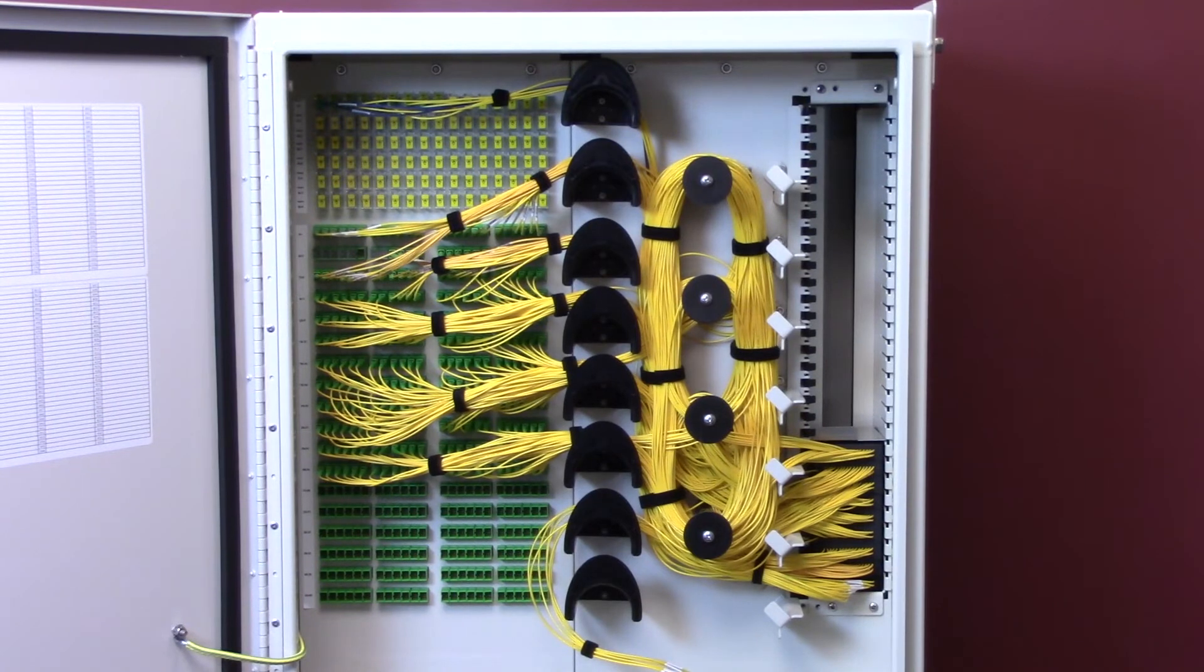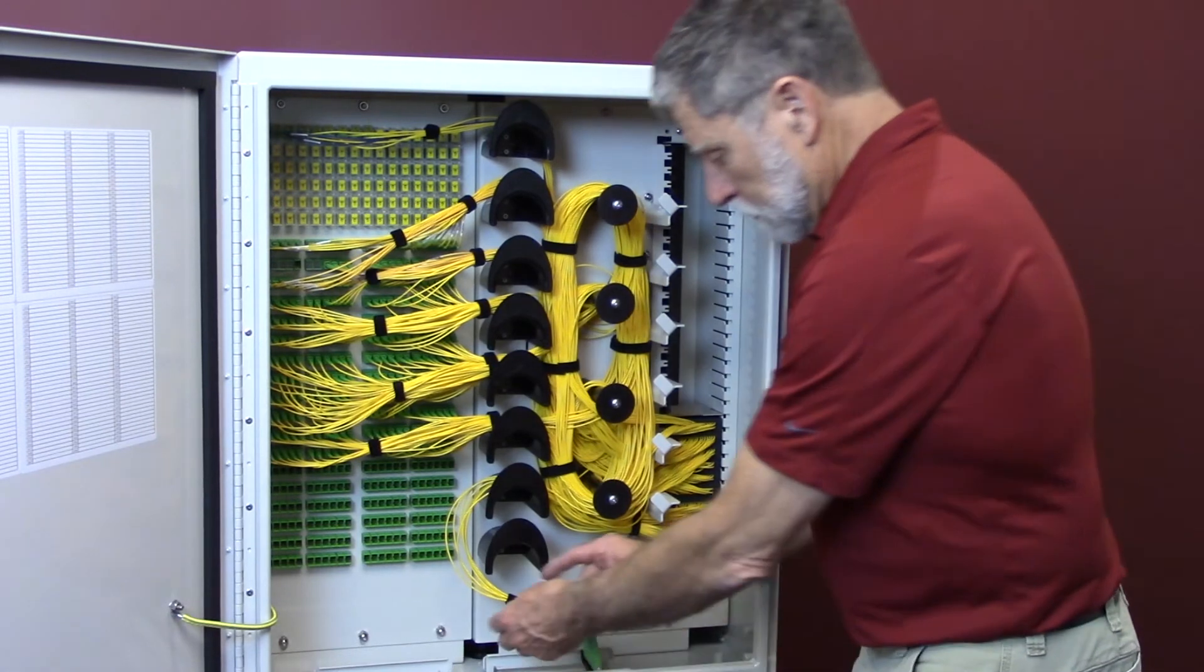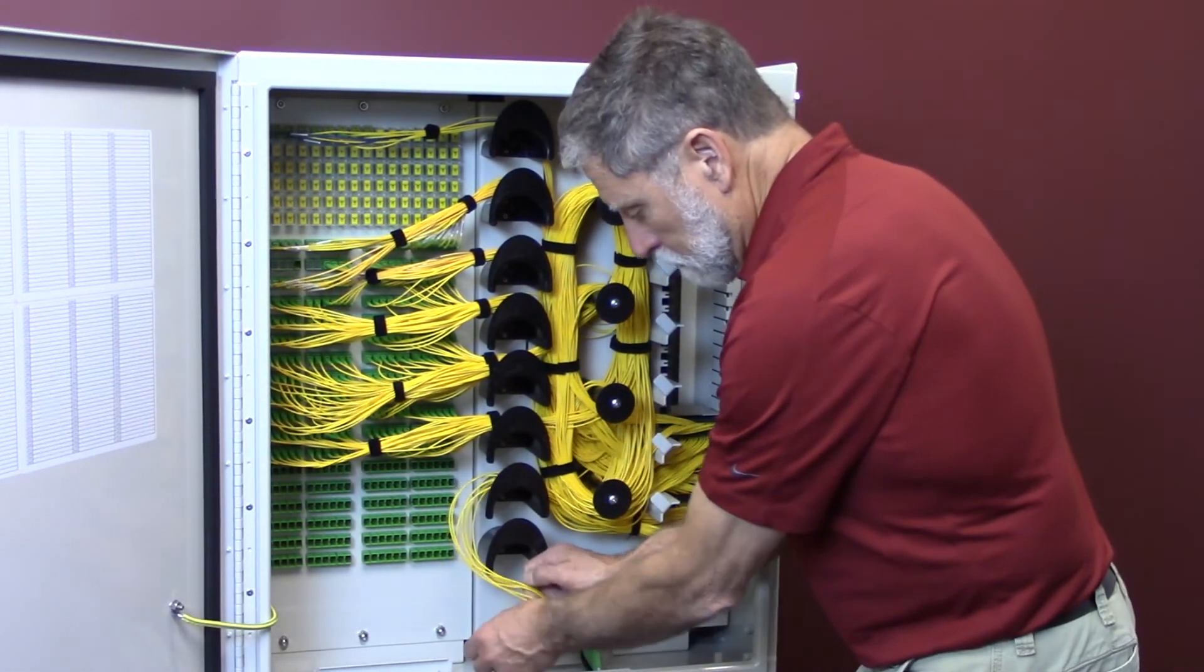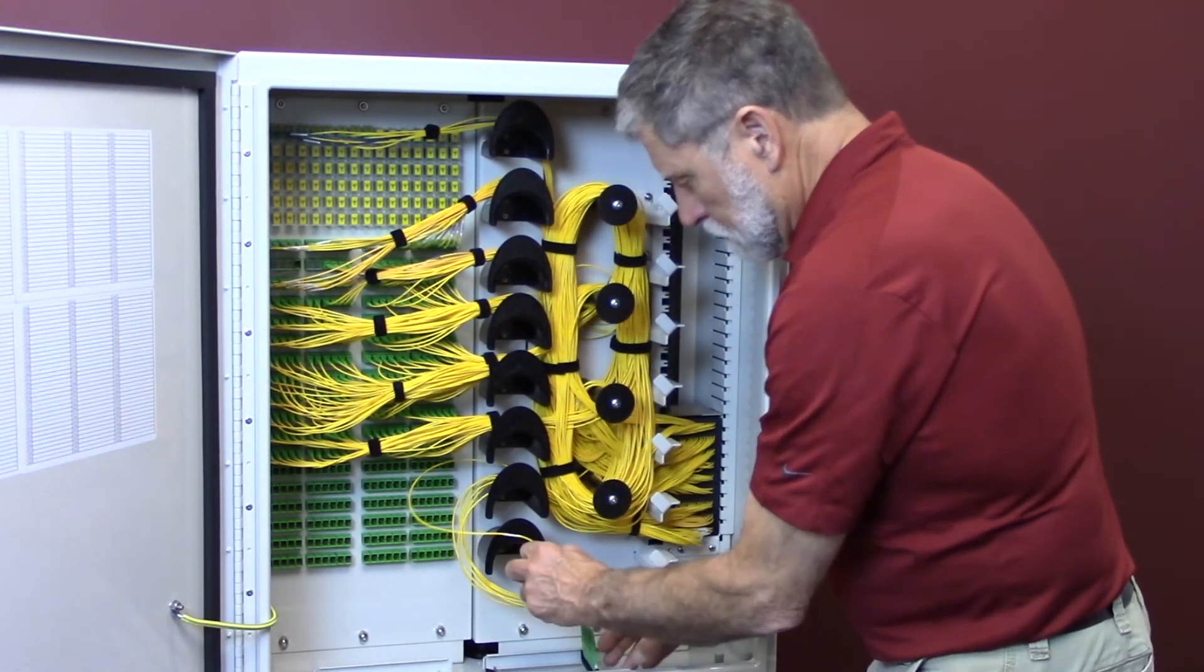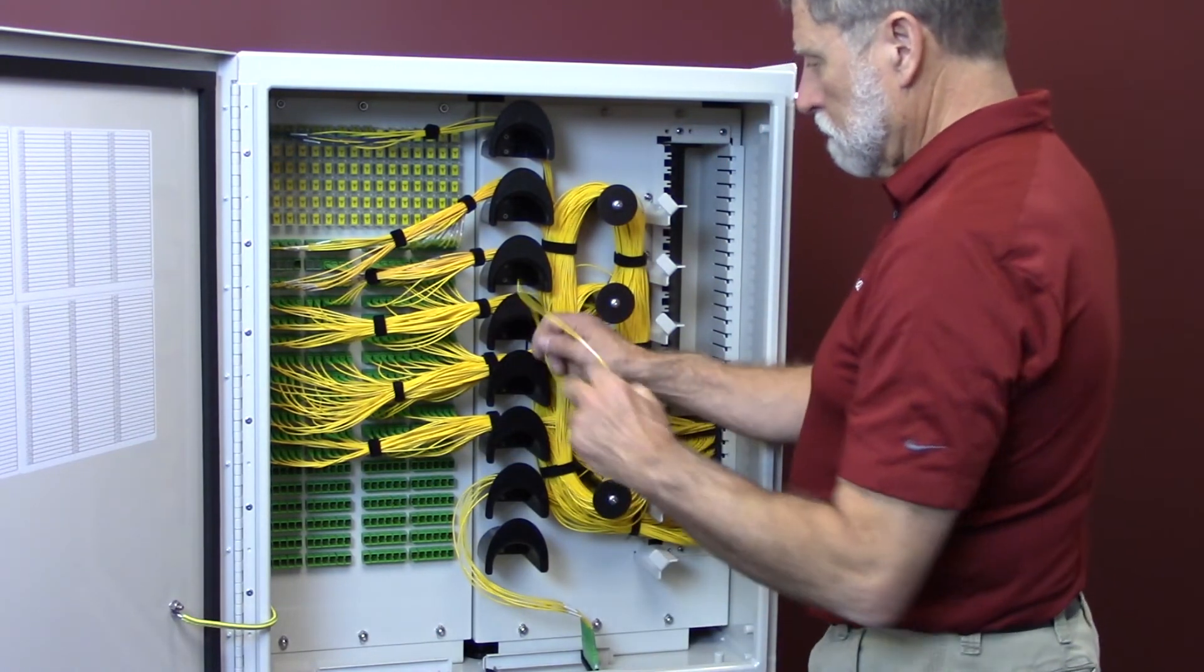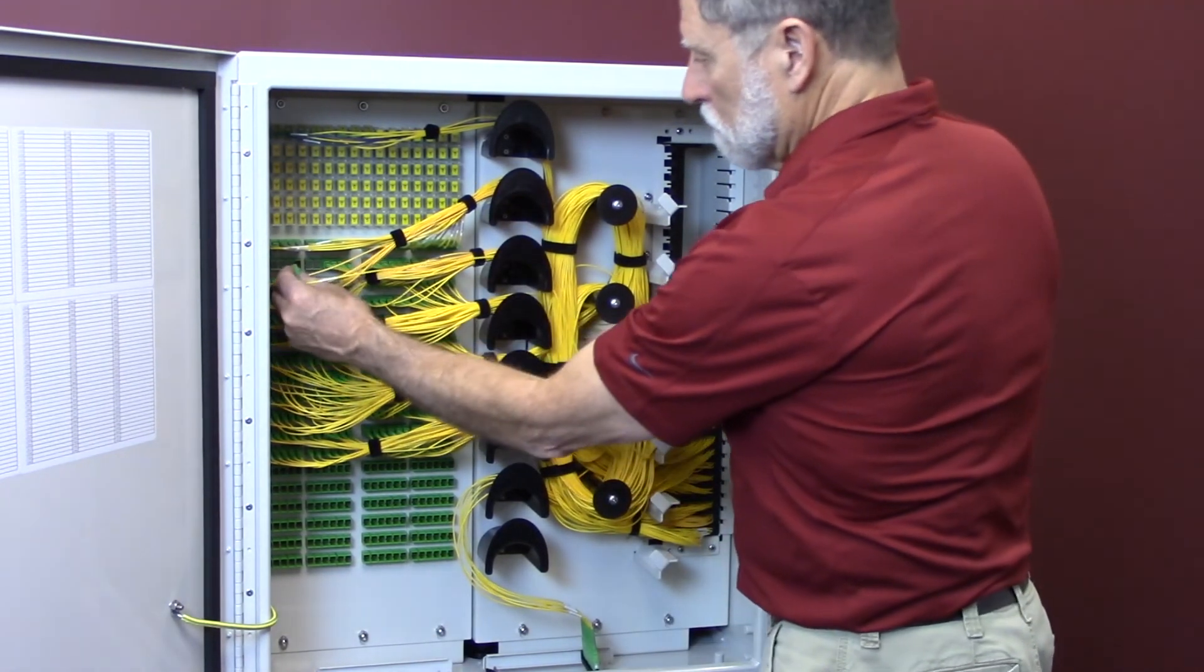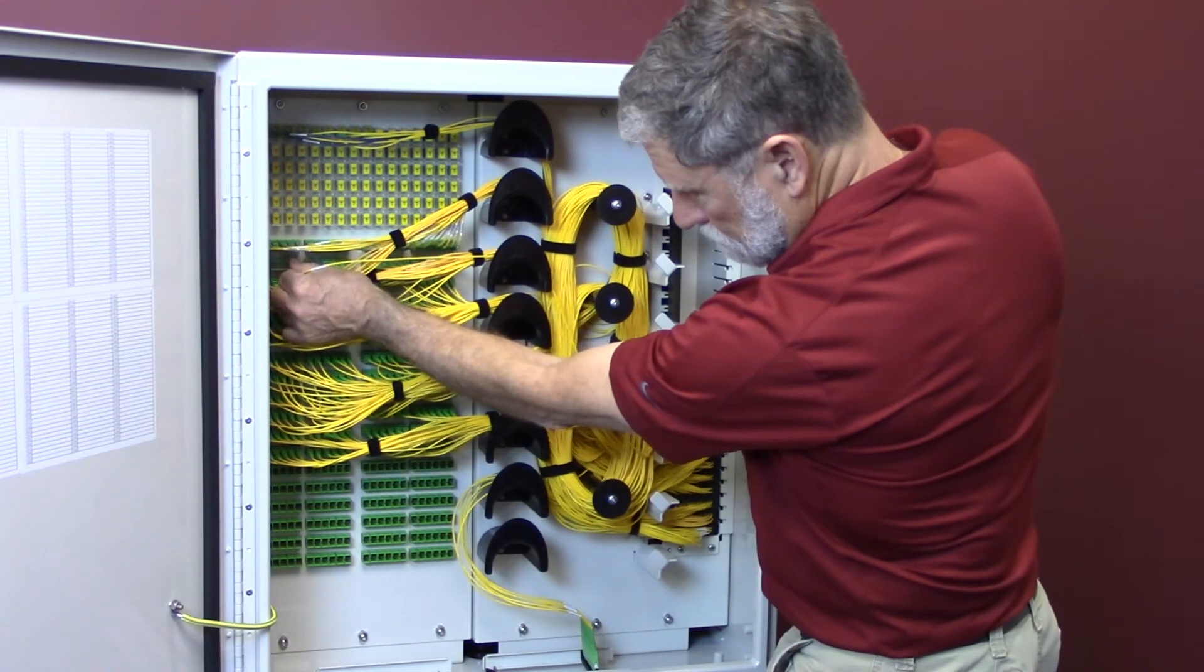Use the same procedure to install additional splitter modules. When it becomes necessary to activate one of the unused splitter tails from the splitter tail storage section, remove a splitter tail from the storage section and route the tail as previously demonstrated in this video.